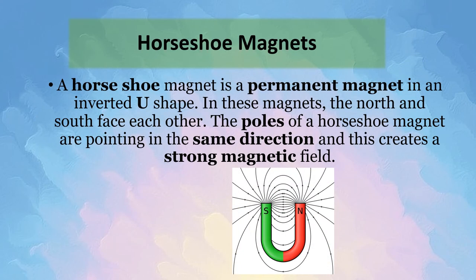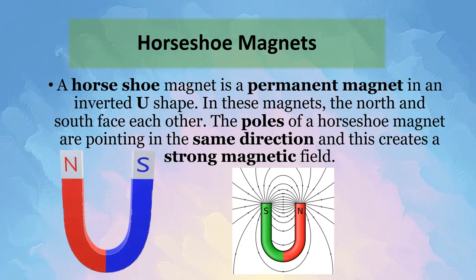Now let's look at horseshoe magnets. A horseshoe magnet is a permanent magnet in an inverted U shape. These magnets derive their name from the fact that they are shaped like horseshoes. In these magnets, the north and the south face each other. The poles of a horseshoe magnet are pointing in the same direction and this creates a strong magnetic field. Hence, horseshoe magnets are stronger than bar magnets because of their shape and their strong magnetic field. Because of this, horseshoe magnets are used to lift heavy objects.